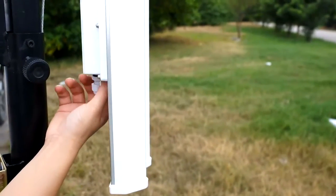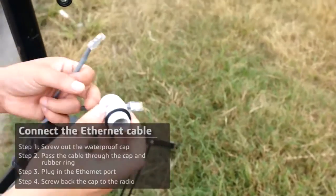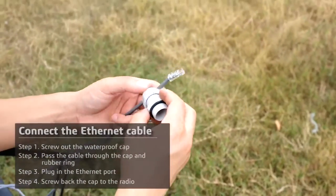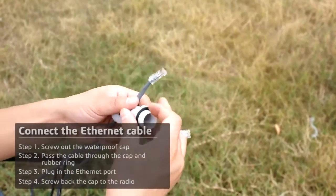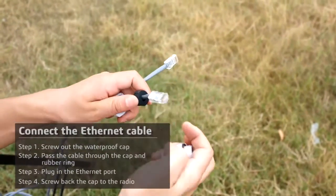For the fourth step, we need to connect the ethernet cable. Now screw out the waterproof cap. Then pass the cable through the bottom cap, rubber ring, and main port showing the cable.